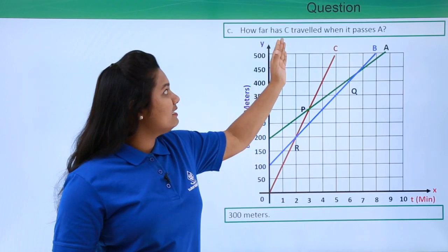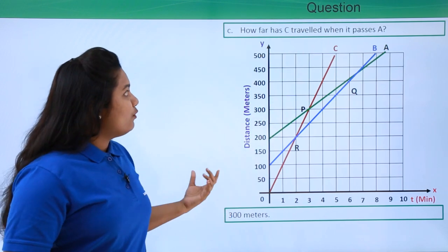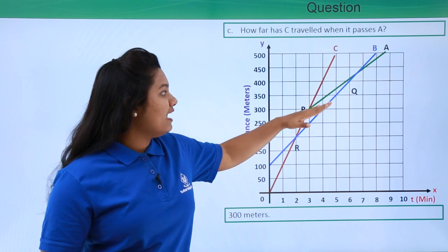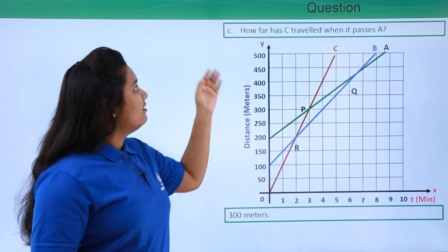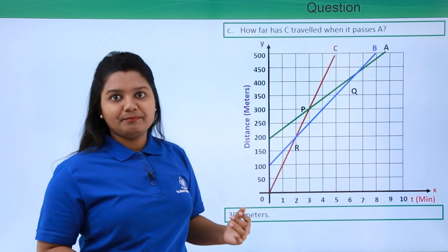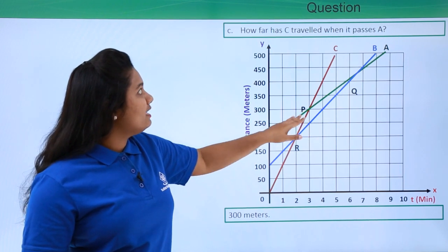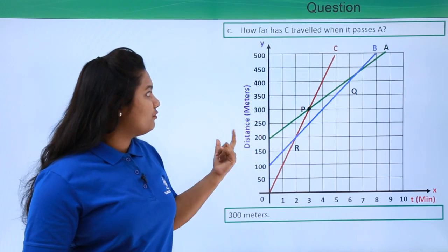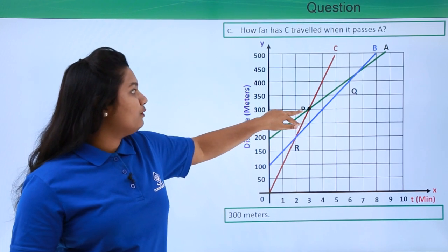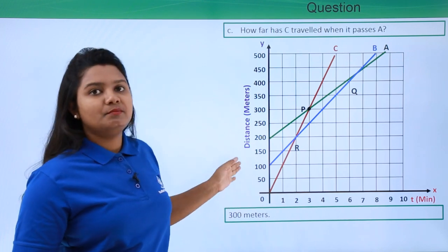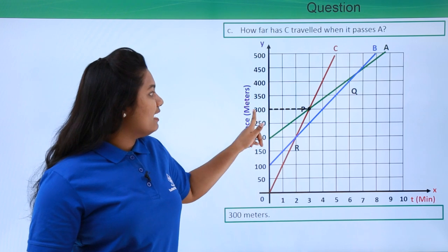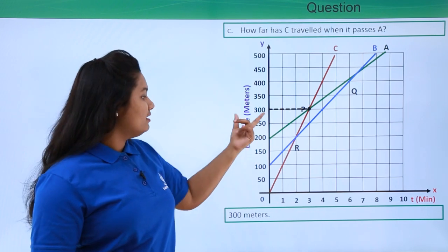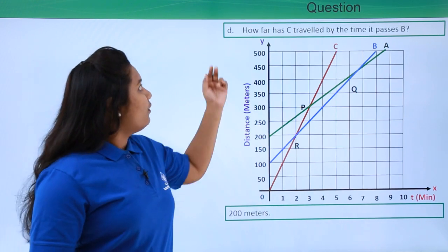The next question is: how far has C traveled when it passes A? C passes A at the intersection point P. At this point we need to find the distance traveled by C, so we draw a perpendicular from point P to the y-axis where distance is plotted. We see that it touches somewhere around 300 meters. So the distance C has traveled when it passes A is 300 meters.